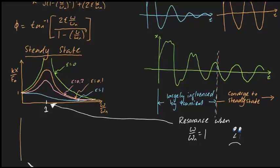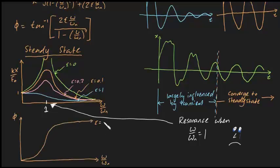Lastly, just to give you a little bit more information, the steady state phase can be plotted against omega on omega n as well.